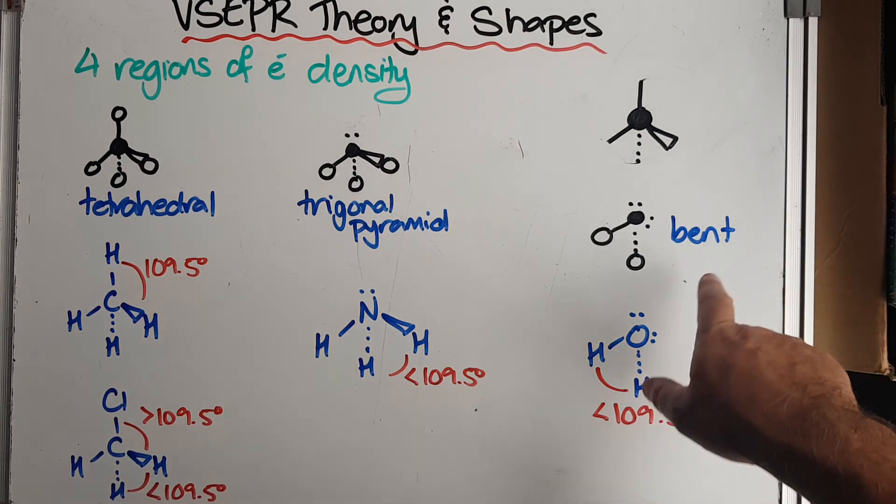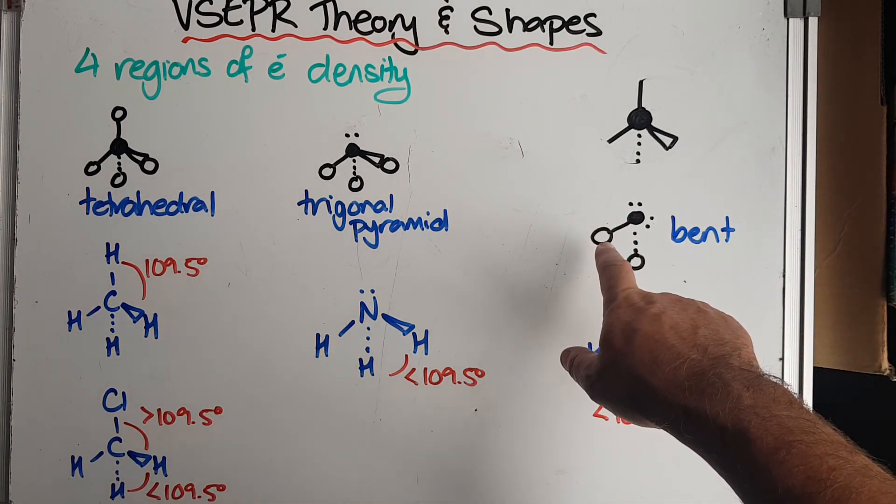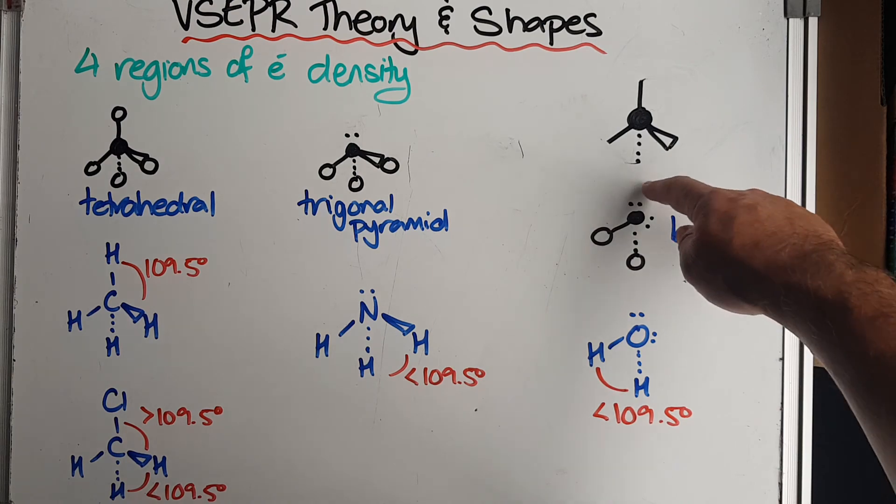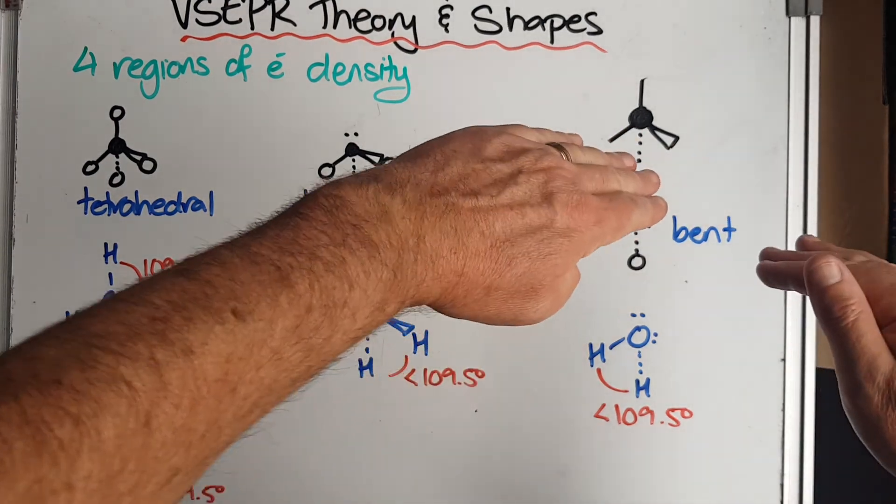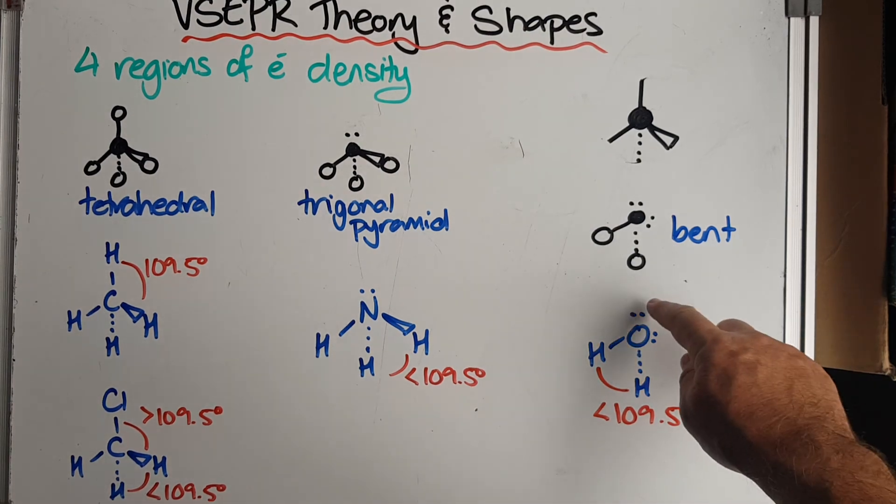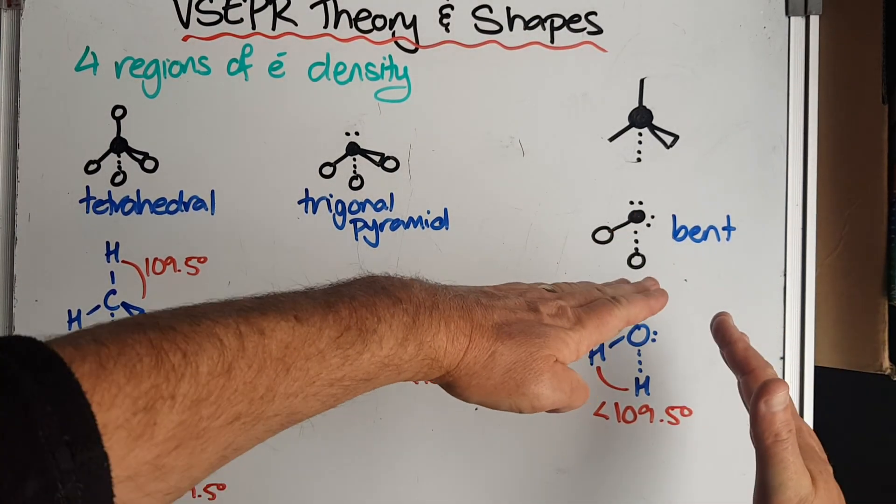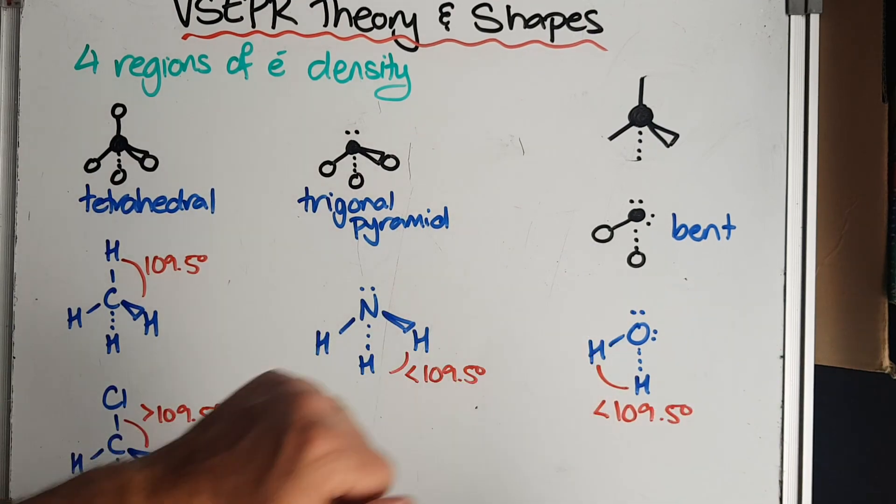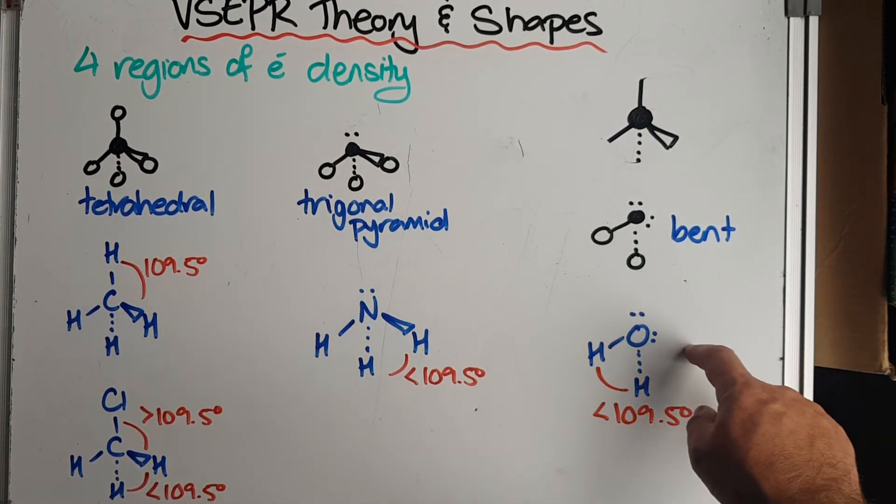Whereas when we get to two regions of electron density, sorry, two bonding pairs and two lone pairs, we've now got a lot more repulsion. So water is a really good example of this. And now the bond angle is down around that 107.5 degrees. It's been pushed down quite a lot. So these two lone pairs push the two hydrogens closer together because of their repulsion.